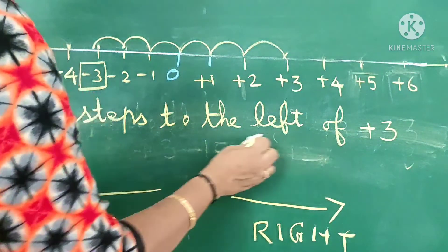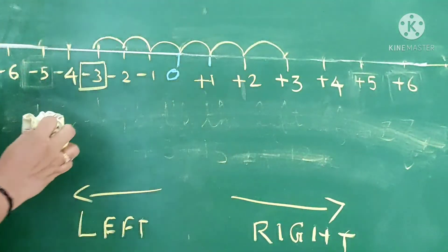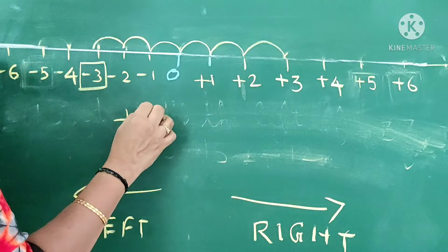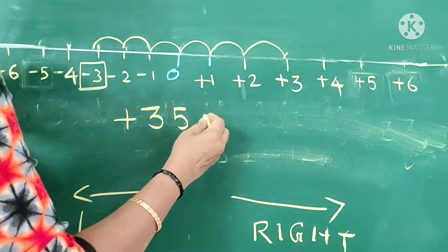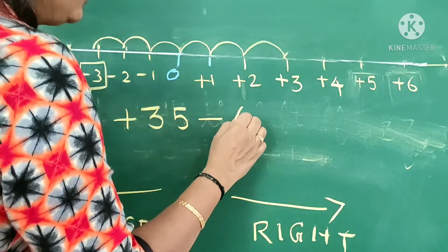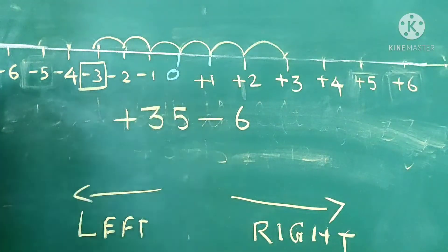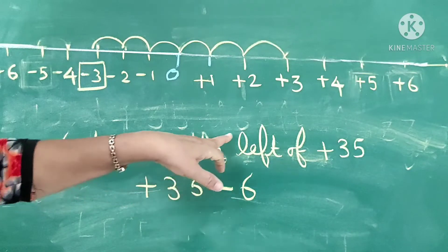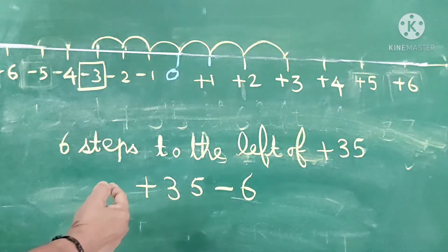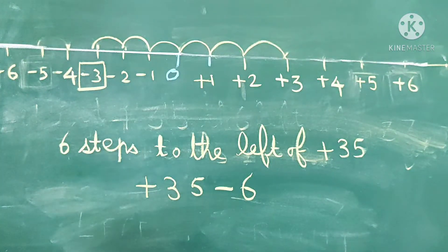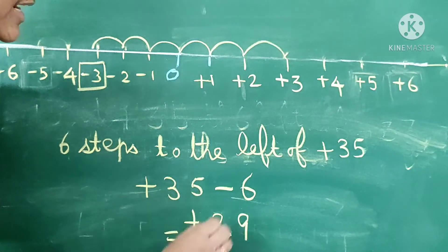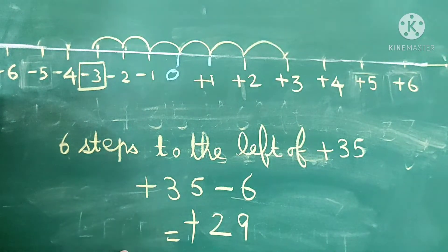One more example: positive 35, negative 6. The statement for this is '6 steps to the left of positive 35.' Both numbers have different signs, so we subtract: 35 minus 6 gives 29. The bigger number is 35 and it possesses positive sign, so the answer is positive 29.